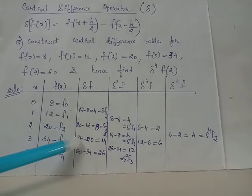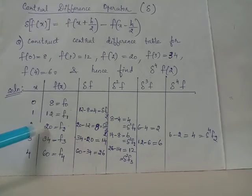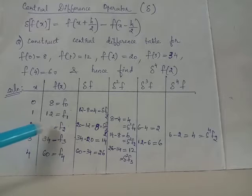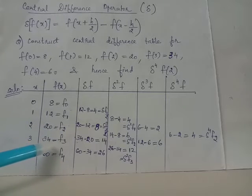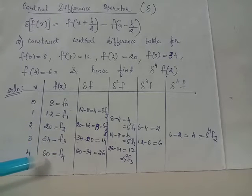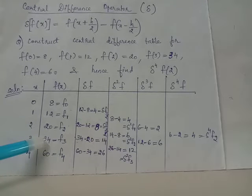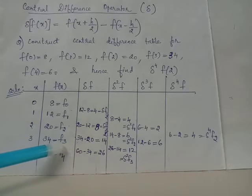The third value to be written here will be 34 minus 20 which is 14, written midway between these two values. Next value will be 60 minus 34 which is 26, written midway between these two values.